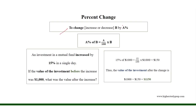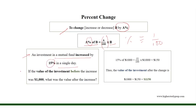To change B by A percent, A percent of B equals A over 100 times B, because percent is equivalent to 1 over 100. For example, an investment in a mutual fund increased by 15% in a single day. If the value of the investment before the increase was $1,000, what was the value after the increase?